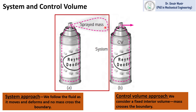In the control volume approach we consider a fixed interior volume, so the volume shown by this dashed line does not change with respect to time. But mass can cross the control surface and its boundaries. So it is easy to solve fluid flow and heat transfer problems by using the control volume approach.